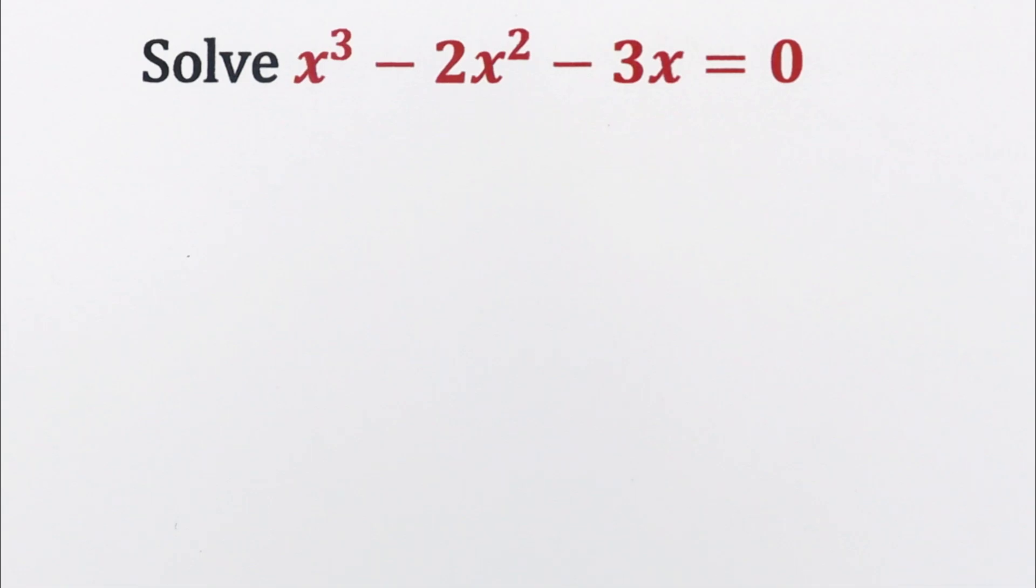Welcome to Calvin's Online Math. Let us look at this cubic equation. Solve x cubed minus 2x squared minus 3x is equal to 0.